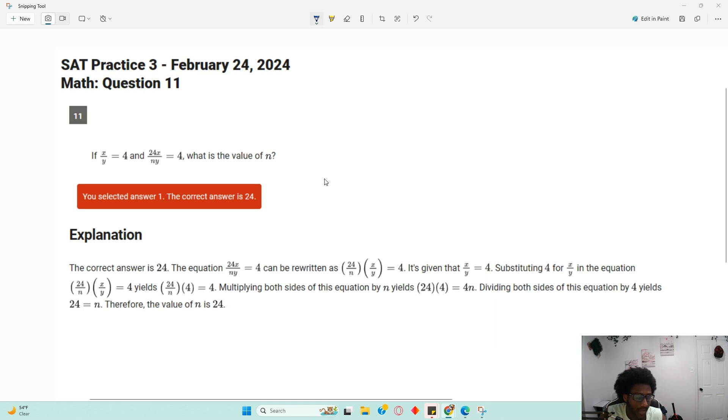So we have x over y equals 4. We're going to cross multiply. So 4 times y equals x. Okay, yellow was definitely the worst one to pick. 4 times y equals x.